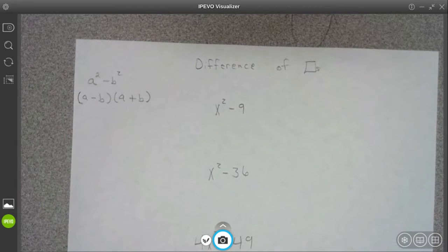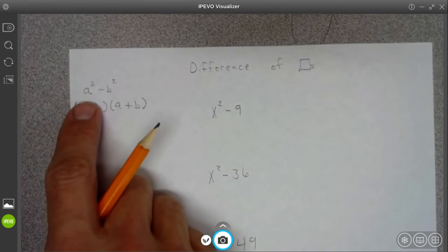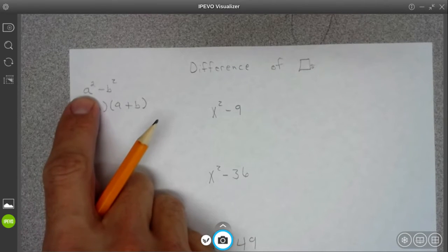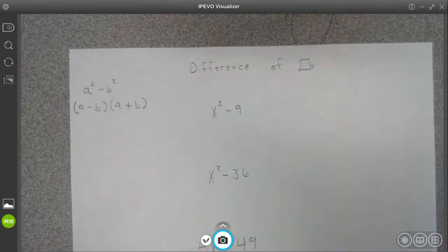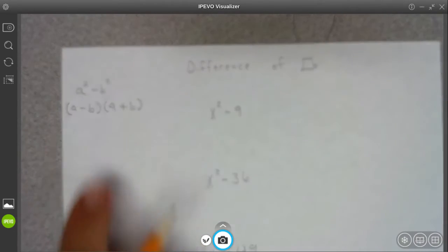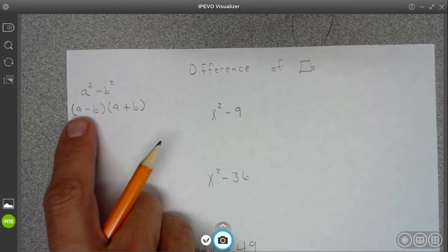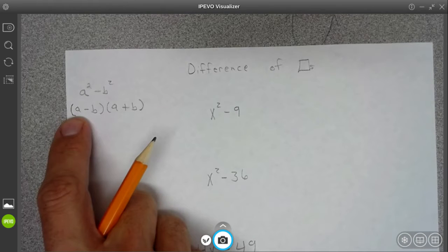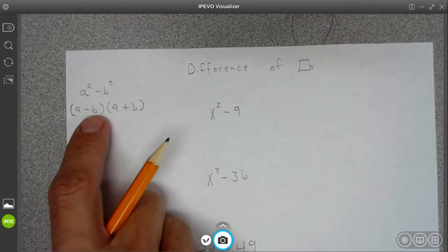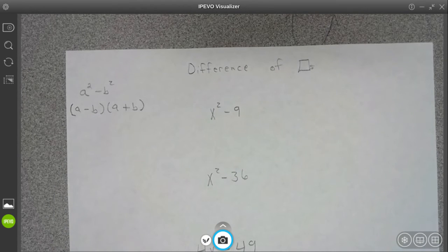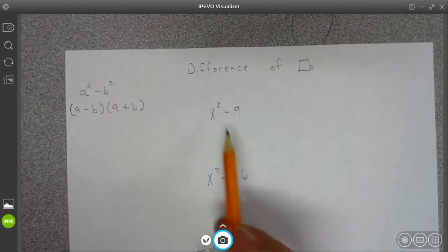When you have two perfect squares - something to the second power and something to the second power - and you're subtracting them, you can rewrite it as the square root of the first thing and the square root of the second thing, where one's minus and one's plus. You can write it in factored form like that. It's really easy to apply, so I'm going to show you.